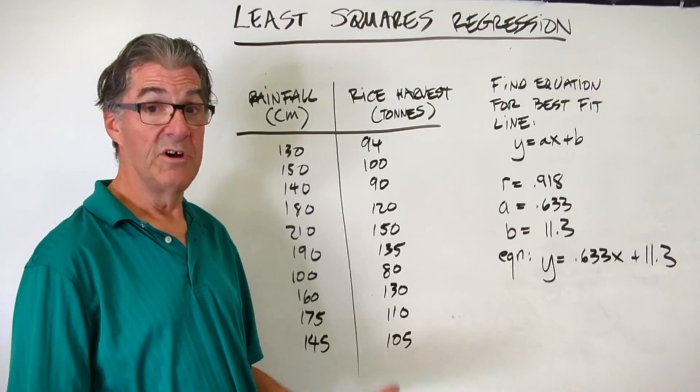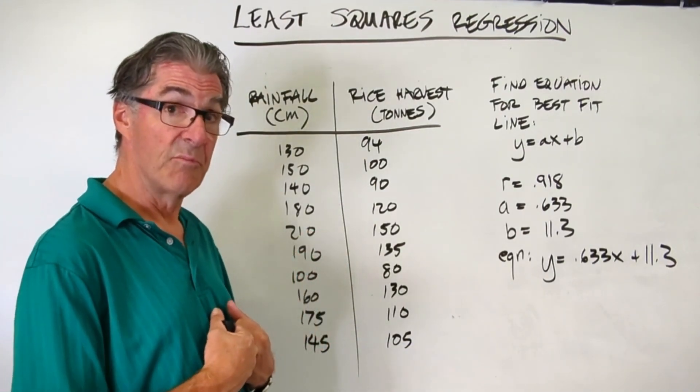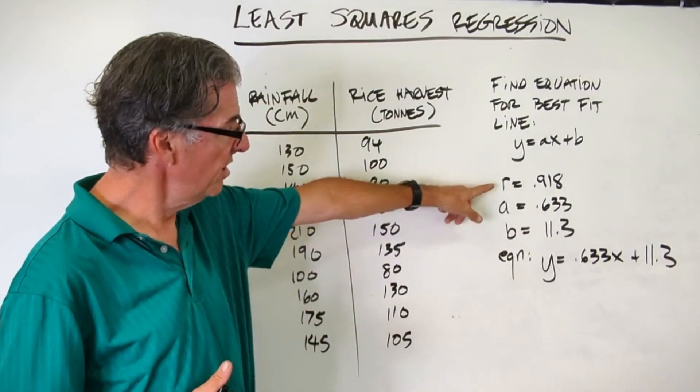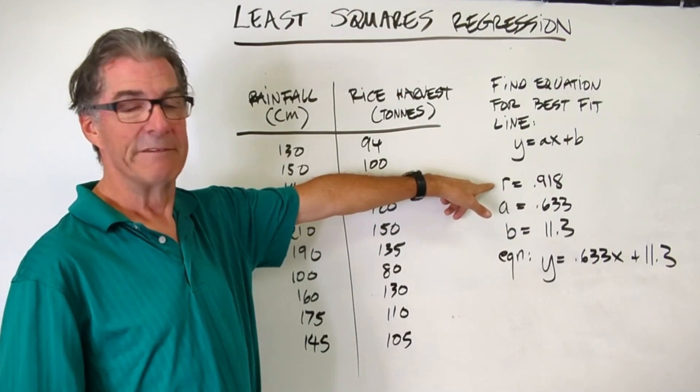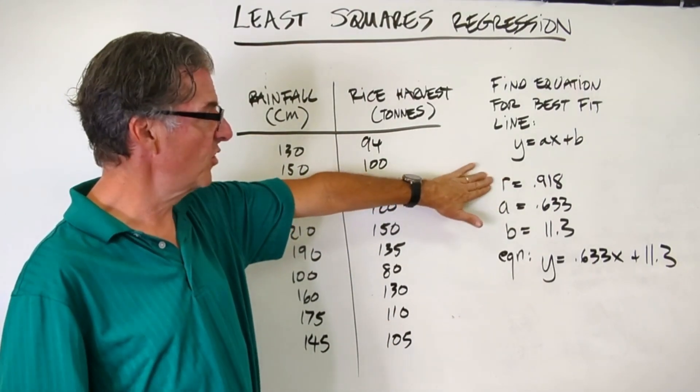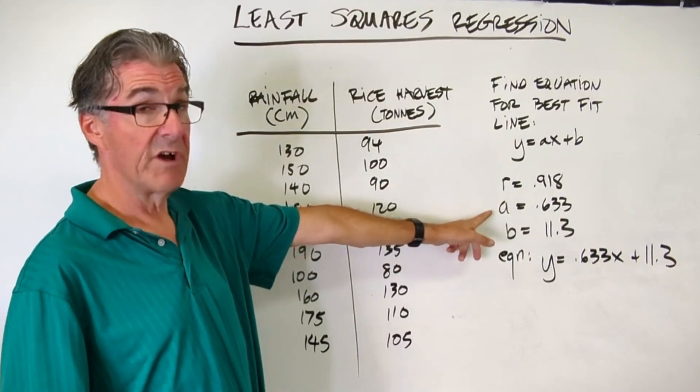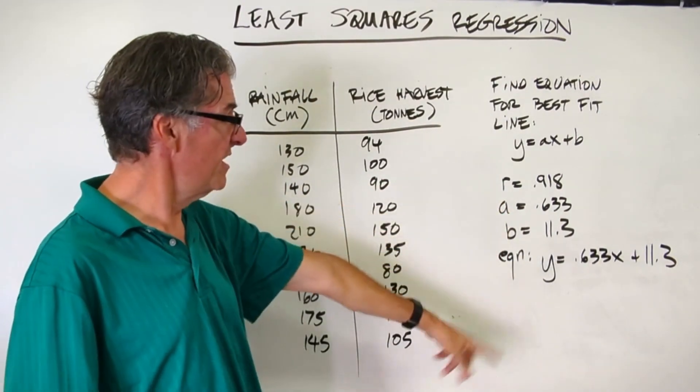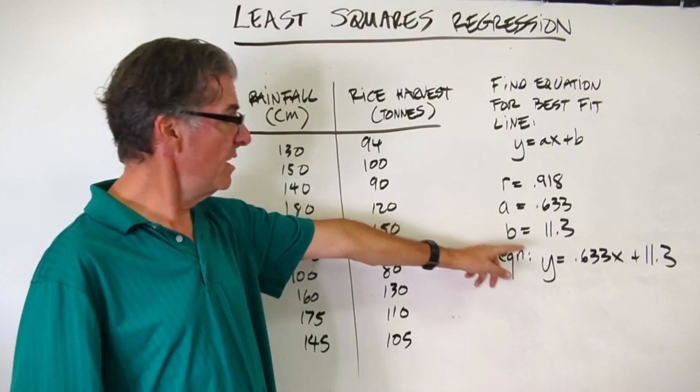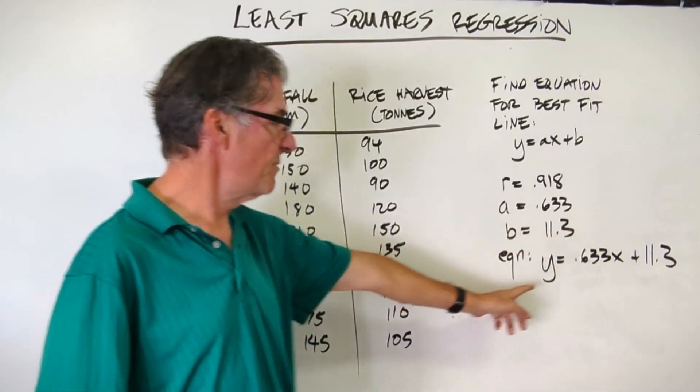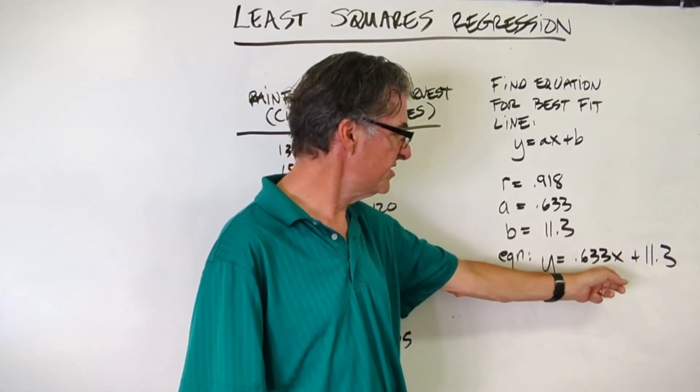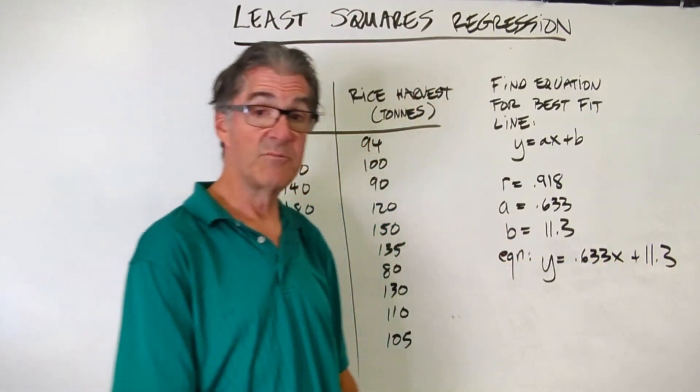All right, I hope that went well for you. Let's check the results, compare what you got to what I've got here. My r value is 0.918, plenty high enough for a strong correlation, so we're good there. That's a good check. My a, my slope, my gradient is 0.633. My intercept, my b, is 11.3. And here's my equation, y equals 0.633x plus 11.3.